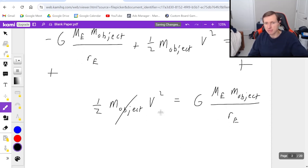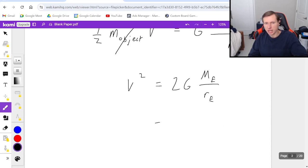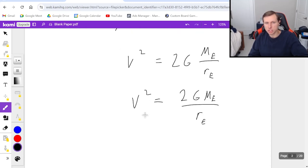You'll notice that the mass of the objects will cancel, which is nice. And if I want to solve for v, it means I'm multiplying both sides by 2 to cancel out the 1 half. So now v squared equals 2G mass of the Earth over radius of the Earth, which I can rewrite like this, 2G mass Earth over radius of the Earth, equals v squared.